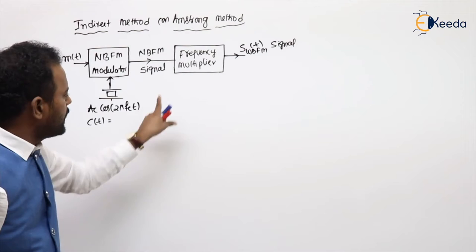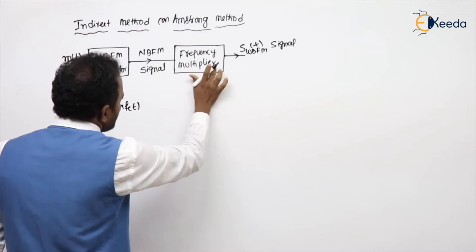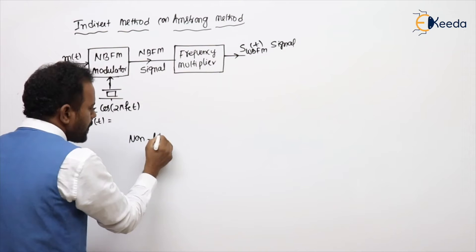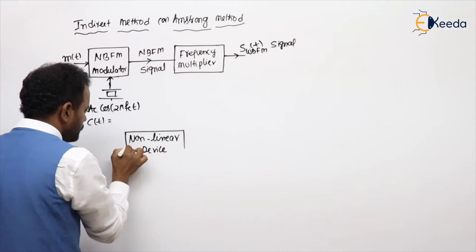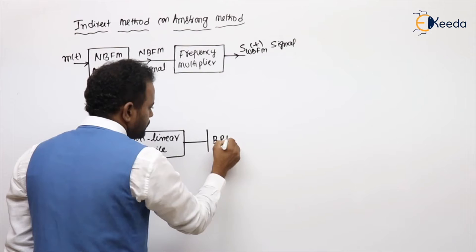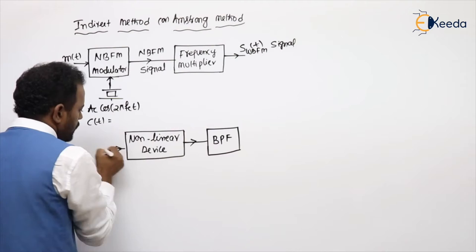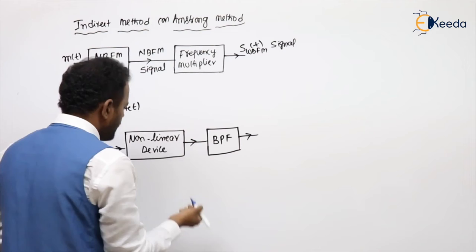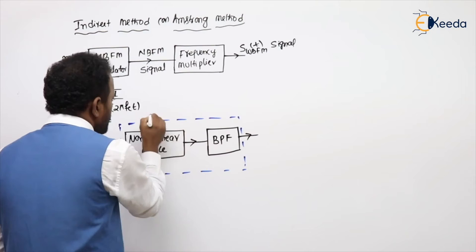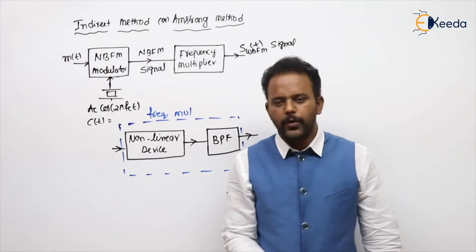The frequency multiplier is a nonlinear device followed by a proper band pass filter. Inside the frequency multiplier block diagram, there is a nonlinear device followed by a band pass filter. This combination is the frequency multiplier — it is going to multiply the frequency.